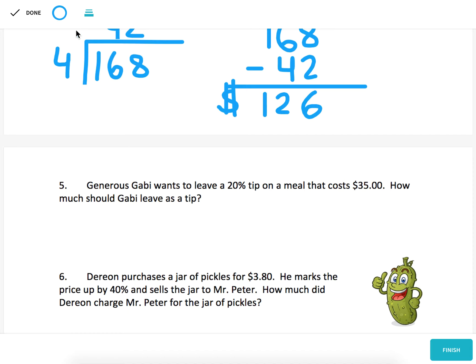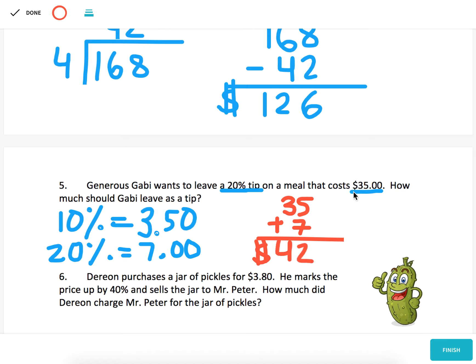Number five, generous Gabby wants to leave a 20% tip on a meal that costs $35. How much should Gabby leave as a tip? Well, tip works much the same way as tax does. You add it on to the final cost. So let's see, a 10% tip would be $3.50. That means a 20% tip would be $7.00. Another way we could have gotten there is by dividing 35 by 5 since 20% is one fifth. However, I just did what I told you not to do at the start of this video. I answered the question what's the final price of the meal, but what it's asking is how much should Gabby leave as a tip. So the answer is simply $7.00 because that's what she should leave as a tip.